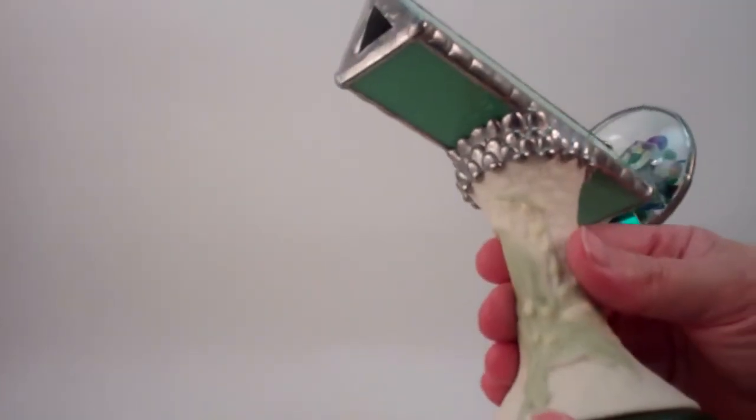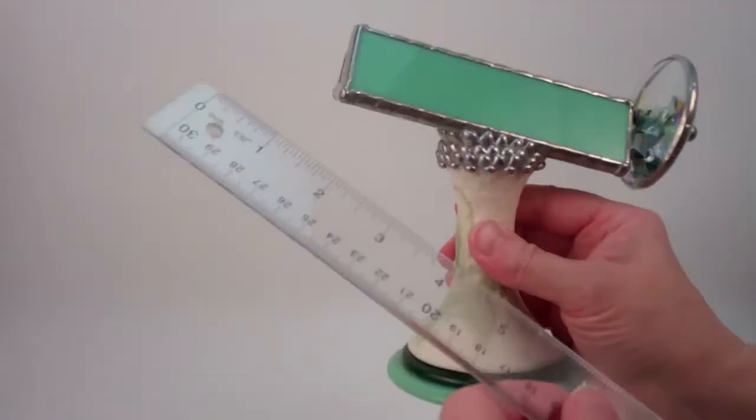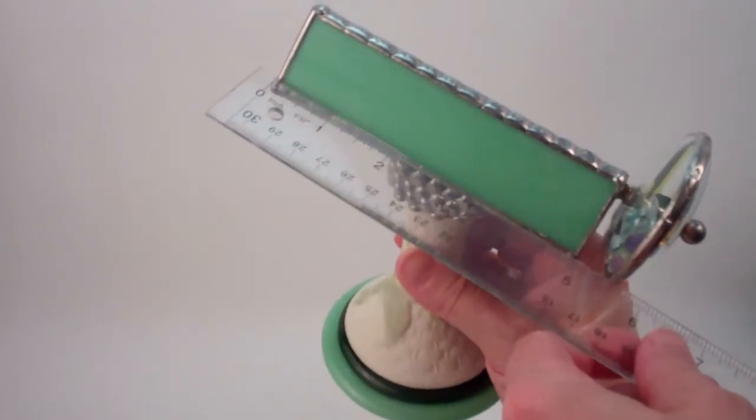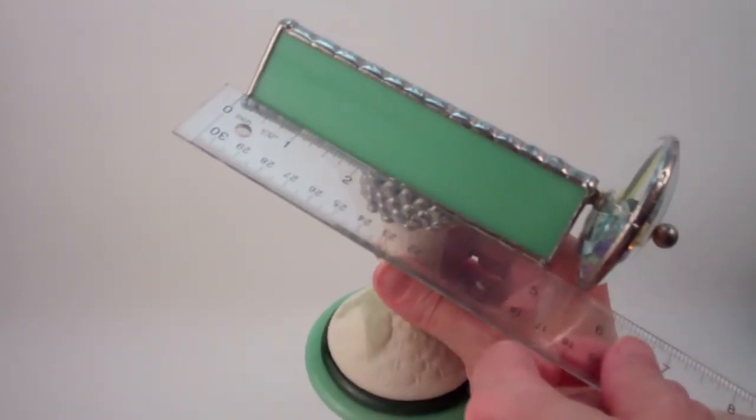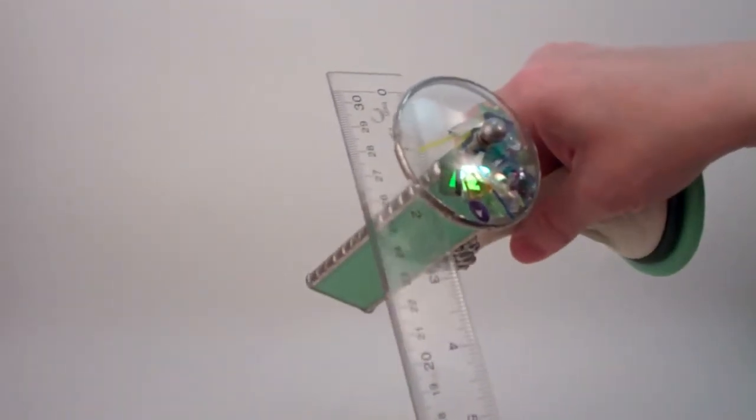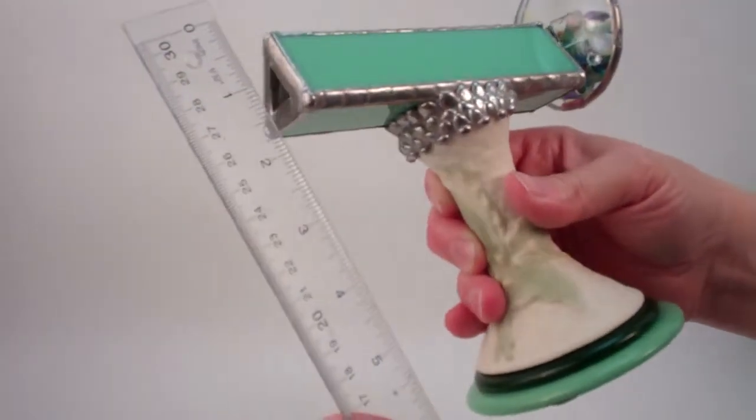She built her kaleidoscopes with traditional copper foil stained glass techniques and the fused glass and the main barrel of the kaleidoscope is a five inch length. The diameter of the object chamber is two and a half inches.